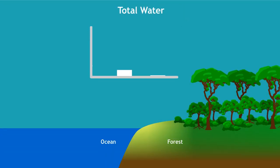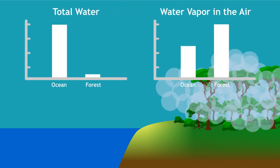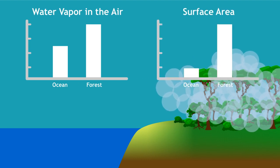While there is more water in the ocean than in forests, forested areas have more water vapor in the air. This is because forests, especially healthy ones, have a lot more surface area for water to evaporate off of.